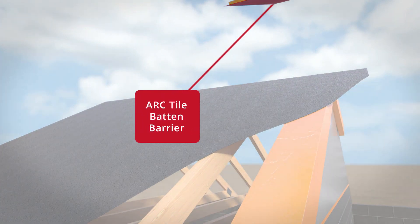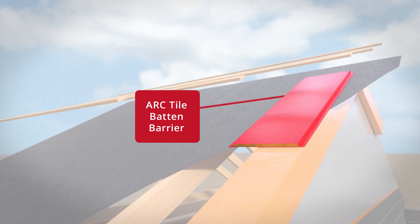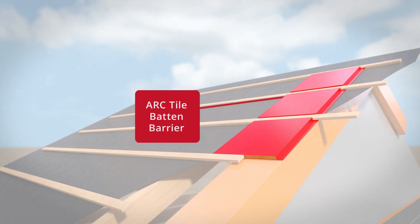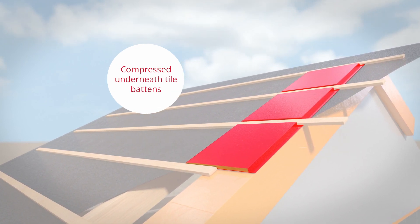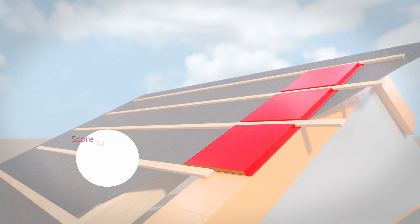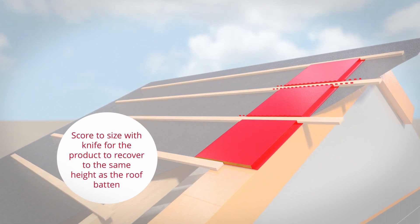The Arc Tile Batten Barrier then adds further fire stopping protection above the roof membrane but beneath the roof covering. Simply fitted by compressing underneath the tile battens and scoring to size.